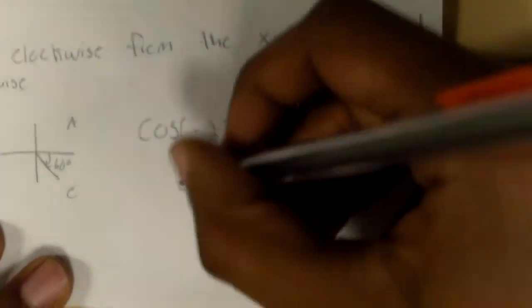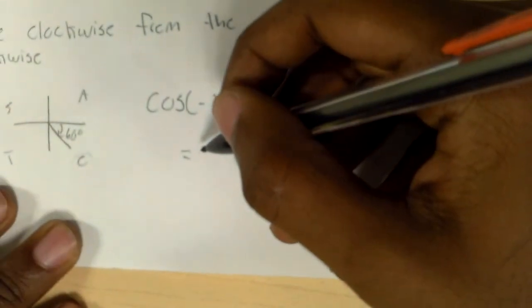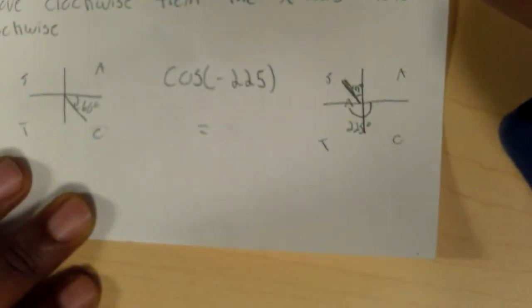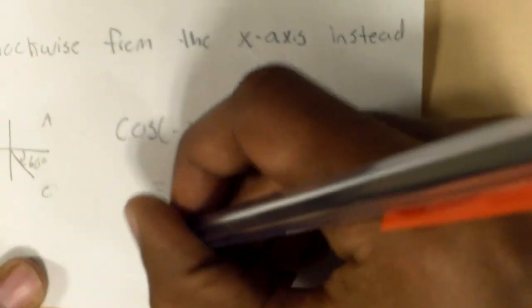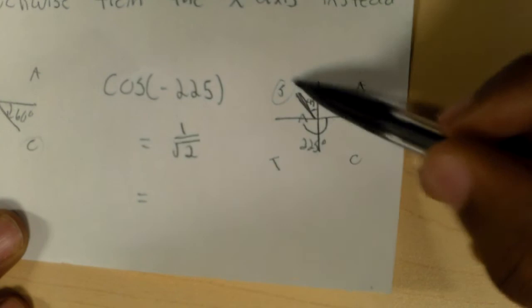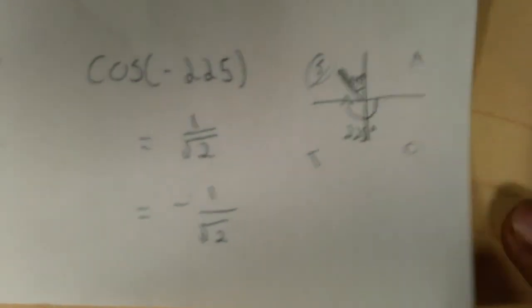So the cos of 45 is equal to adjacent over hypotenuse, so 1 over the square root of 2. And because it's in the sine quadrant, then it's negative. So it would be negative 1 over the square root of 2. And that's lesson four.